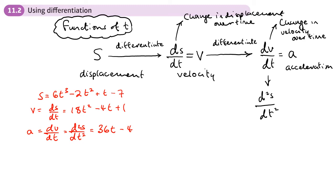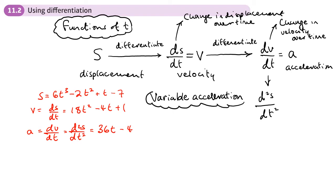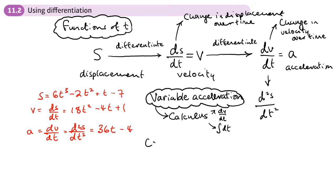This links differentiation to displacement, velocity, and acceleration. We use this when we have variable acceleration — when the acceleration changes. For variable acceleration we use calculus, specifically differentiation here, and integration in the next section. For constant acceleration we use the SUVAT equations.